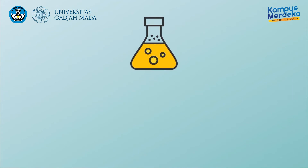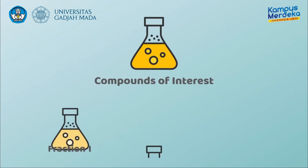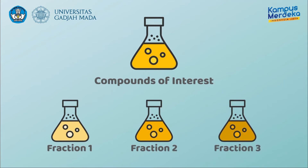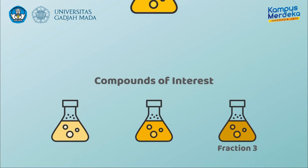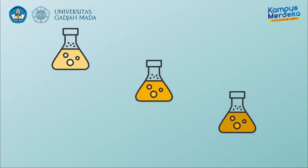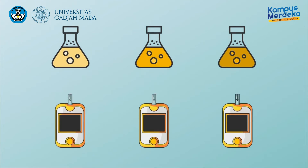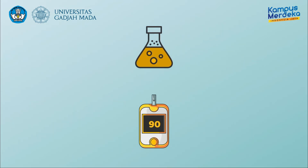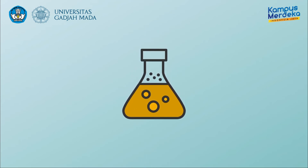To selectively extract the compounds of interest, the extract is then partitioned using other solvents to yield several fractions. These different fractions are then tested for their activity on altering sugar or glucose levels.